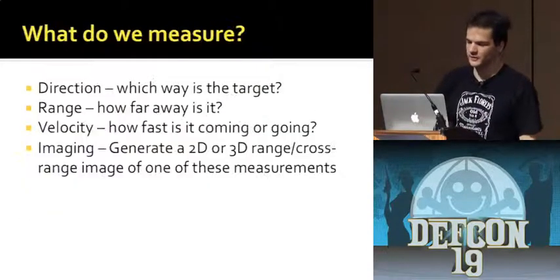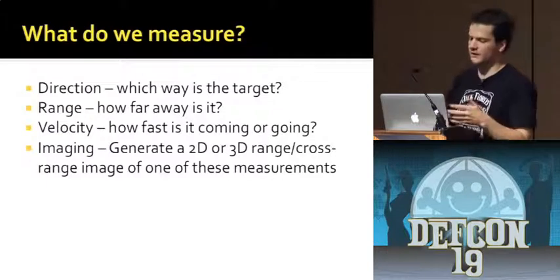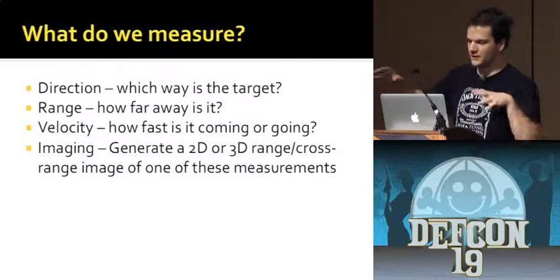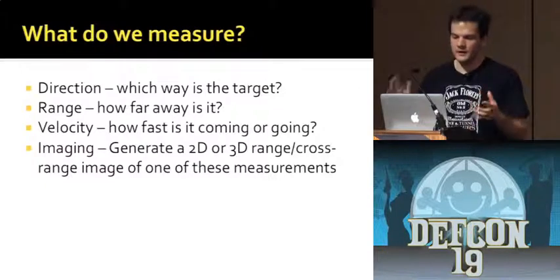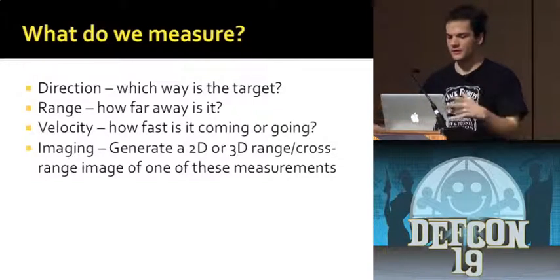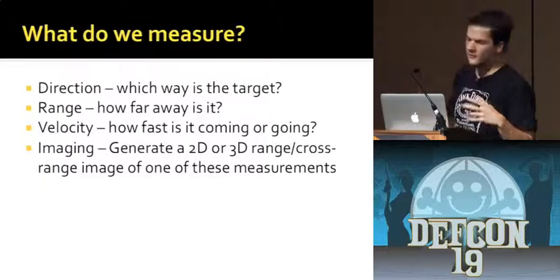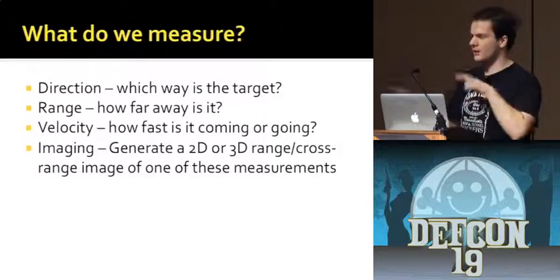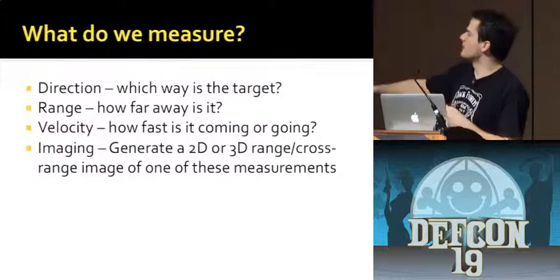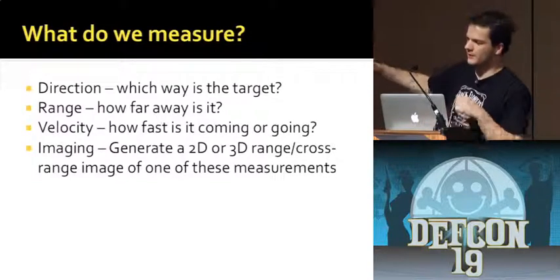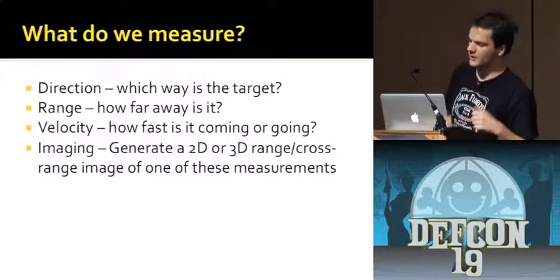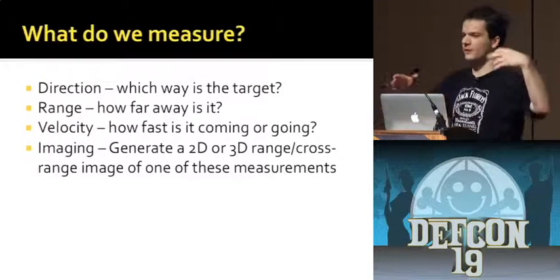What can we measure? Direction — where do I go to get to a target? Range — the distance to the target. And velocity — how fast the target is moving. We can combine all these into imaging, using various techniques to generate a 2D or 3D picture in what I'm calling the range and cross-range domain. In radar, instead of your two image dimensions being up and to the side, one dimension is range — how far away the thing is — and the other is some lateral axis.